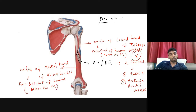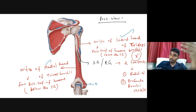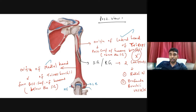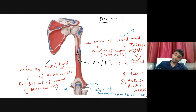The lateral epicondyle is the common extensor origin, and the medial epicondyle is the common flexor origin. The Anconeus muscle originates from the posterior surface of the lateral epicondyle of the humerus.